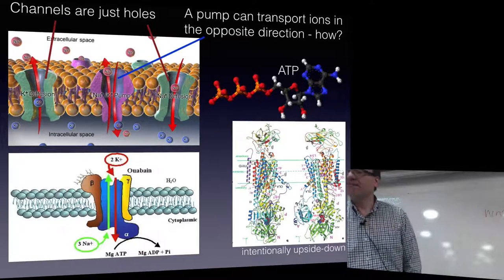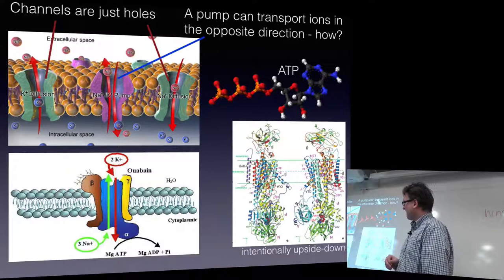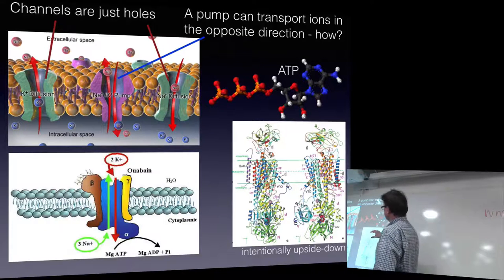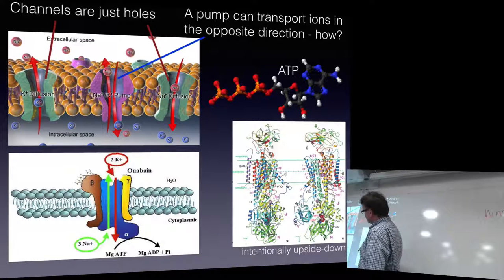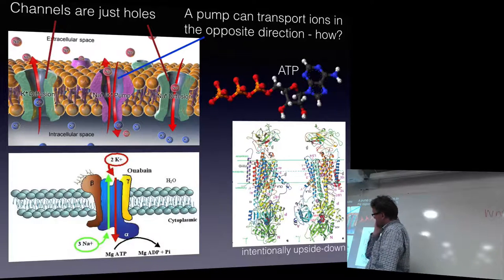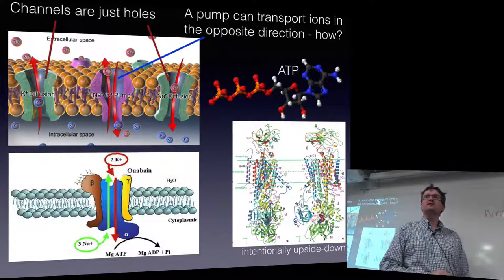A student asks about the role of magnesium with the ATP. The ATP is basically an ion — it would be two-fold negatively charged. The magnesium here is bound to the ATP. Basically, the magnesium is not involved in the ATPase mechanism itself — it stays bound to the ATP during the entire process.